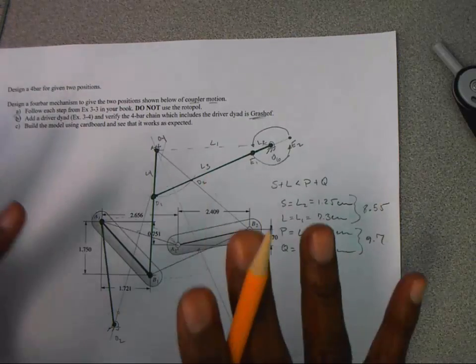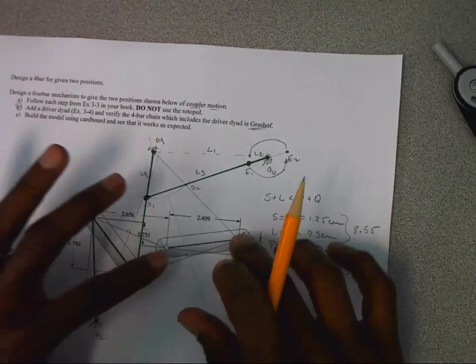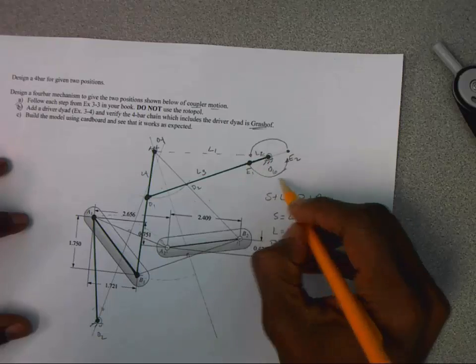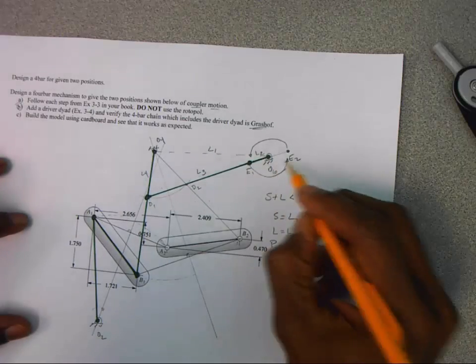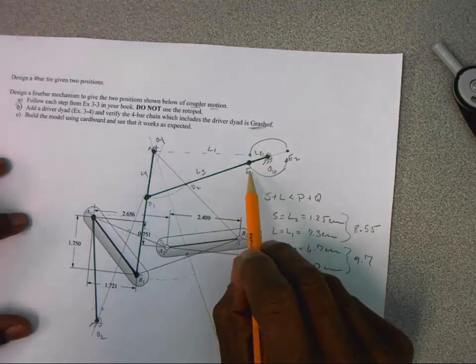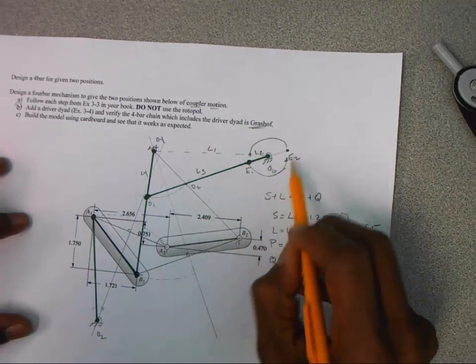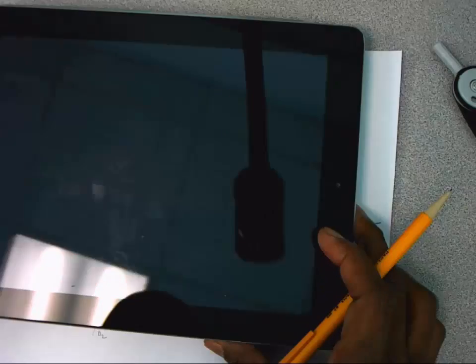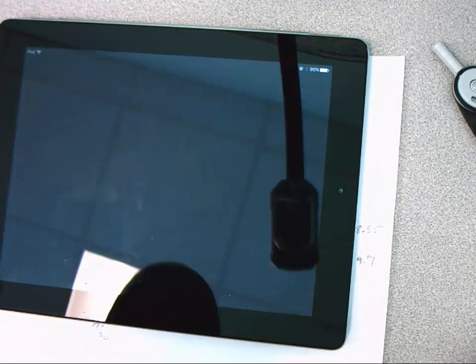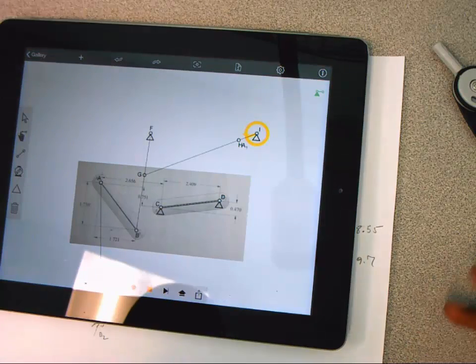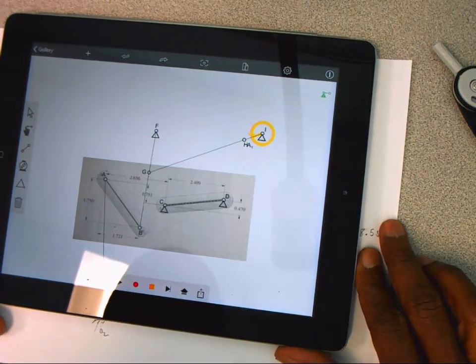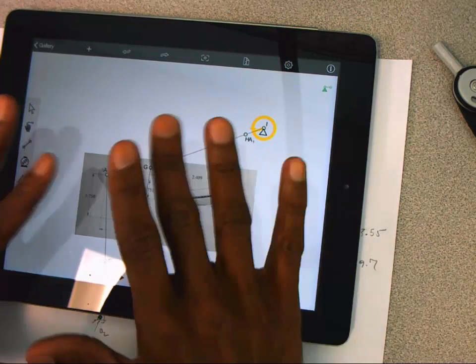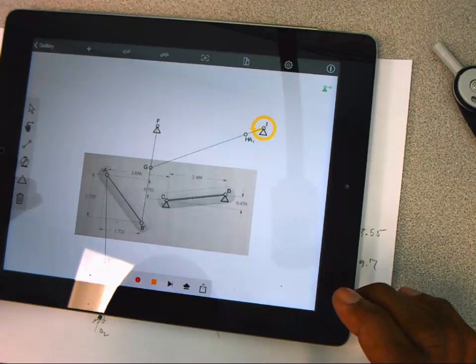But the interesting thing about this mechanism is that it's bounded to move between the two positions shown by a single motor that just has continuous rotation. There's no need to stop this motor and go in the reverse direction. By turning continuously, we go backwards and forwards. I'm going to kind of demonstrate that using the Force Effect Motion app. It's available for Apple devices and for Android devices. You can even run it on a desktop on the Chrome browser.